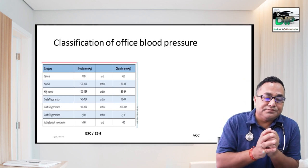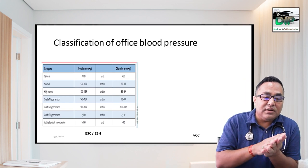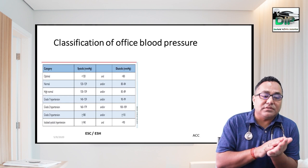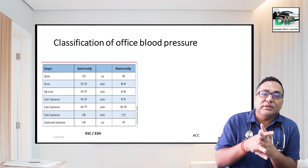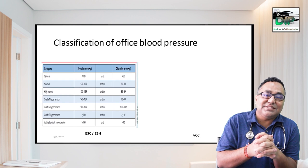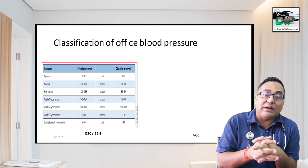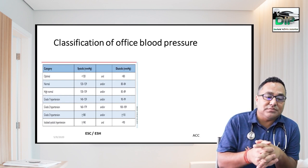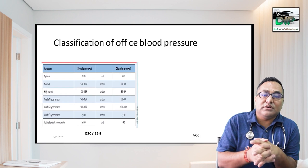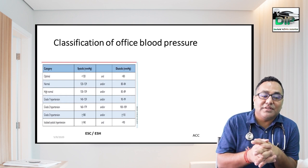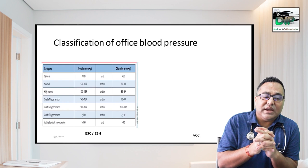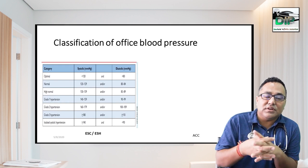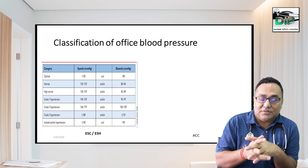She has Grade 1 hypertension. Since she is an elderly patient with systolic BP ≥140 mmHg and diastolic less than 90, she can also be labeled as having isolated systolic hypertension.